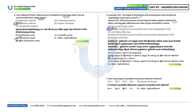Seventh question: How many types of problems are solved by the resection method? The resection method solves two types of problems. Option C is the correct answer. The first is the two-point problem and the second is the three-point problem.